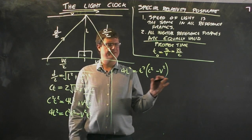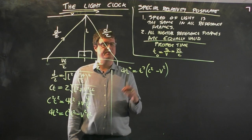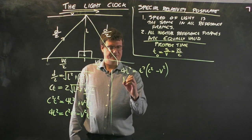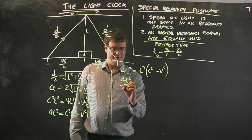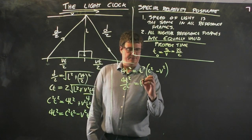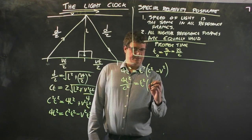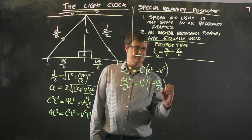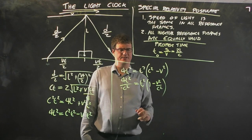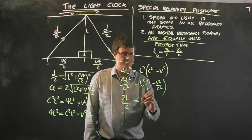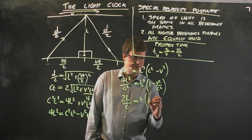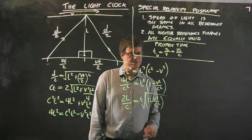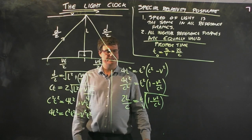Now I'm gonna factorize by C squared. So 4L squared divided by C squared is 4L squared on C squared. T squared is already a factor. C squared divided by C squared is 1. V squared divided by C squared is V squared on C squared. This notation seems kind of weird, why have I rearranged the symbols in this way? Well, this is the proper time.